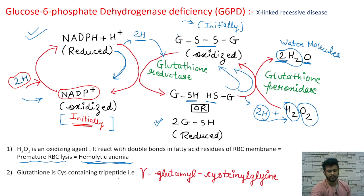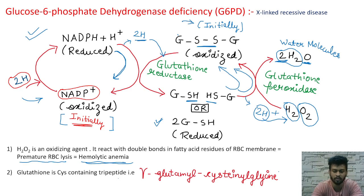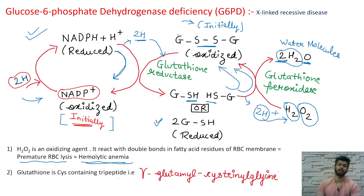Glutathione is a cysteine-containing tripeptide: gamma-glutamyl-cysteinyl-glycine. A direct question can be asked on this. Questions on glutathione have been asked before in many life science exams, including CSIR NET Part B.